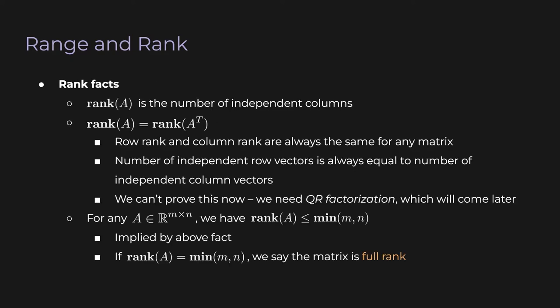Let's look at rank in a little more detail. The rank of A is the number of independent columns. The rank is the dimension of the range, and the dimension of the range is just the number of independent vectors. Any dependent column vectors of A won't add more dimensions to the range. Sometimes you'll hear the terms column rank and row rank. Column rank is just the rank we've been talking about — the number of independent columns. Row rank, as you can guess, is the number of independent rows. If you remember the definition of transpose, you can realize that the row rank of A is just the column rank of A transpose.